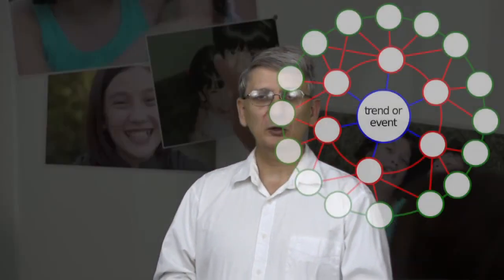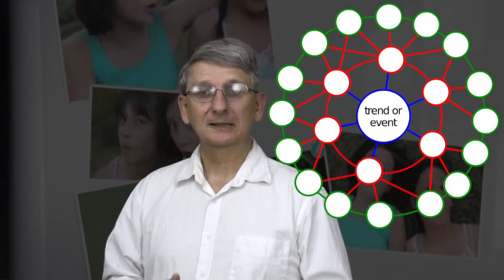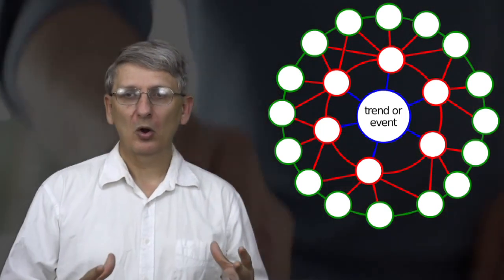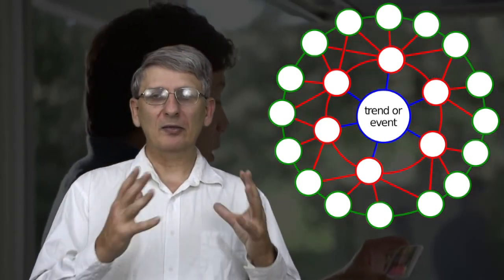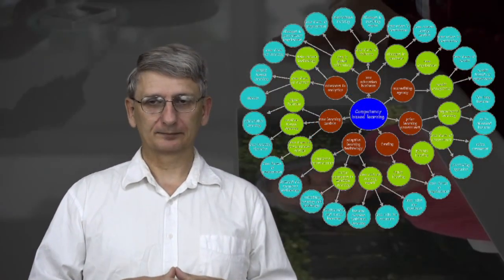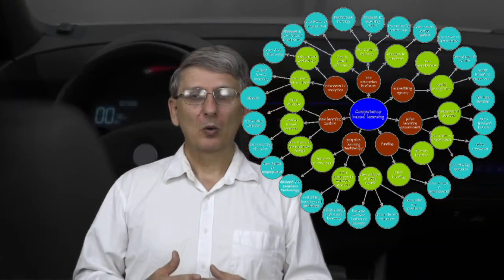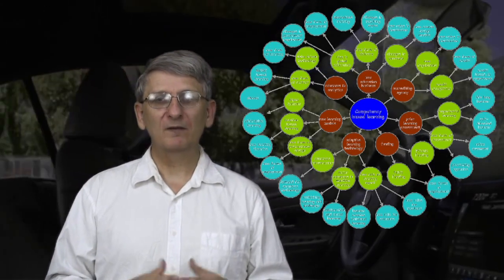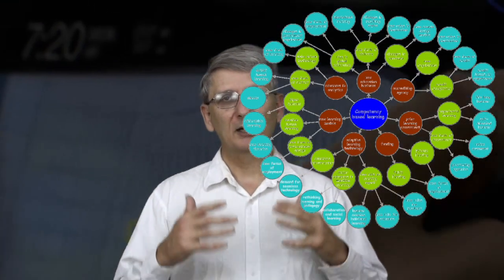Now this can be a multi-stage process, and we can use the tool of futures wheels to structure this process. Starting in the middle with the trend or event associated with the problem, students surround this with possible outcomes that are the result of this trend continuing. And then, on the basis of these outcomes, what else may happen if the trend further continues, building out consequences of these trends in concentric circles.